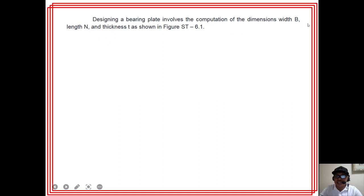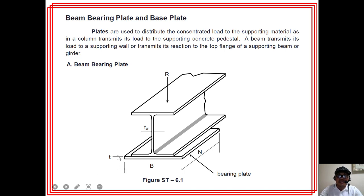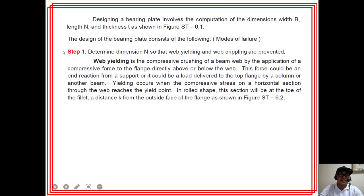Designing a beam bearing plate involves computing three dimensions: the width B, the length N, and the thickness T. Note that B is along the flange (perpendicular to the web), N is along the length of the beam (along the web), and T is the thickness of the bearing plate.